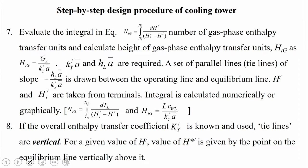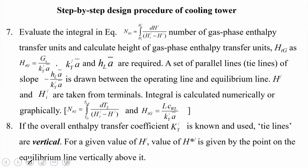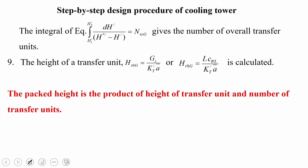The equilibrium line is drawn from the saturation enthalpy-temperature curve, and the operating line is obtained between the bottom and top stations of the cooling tower. The area under the curve ∫dTL / (HI' − H') from TL1 to TL2 is evaluated graphically or numerically, and HTG = L·CWL / (KY'·Ā). Since all gas phase enthalpy transfer is expressed in individual gas phase units, steps 8 and 9 are not required.